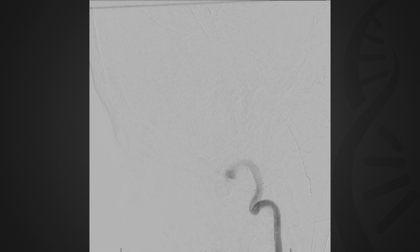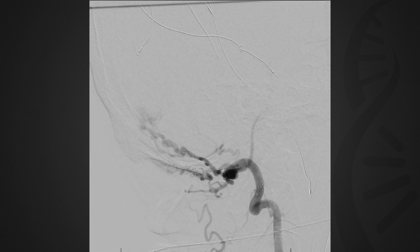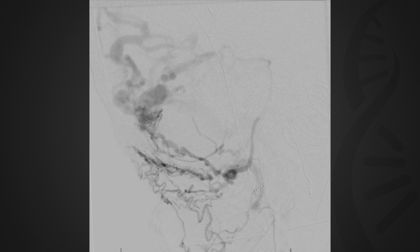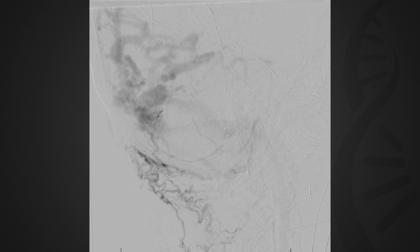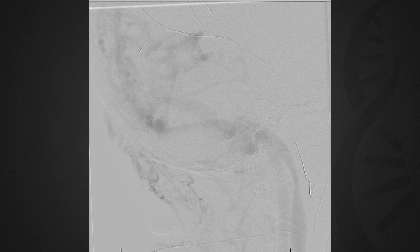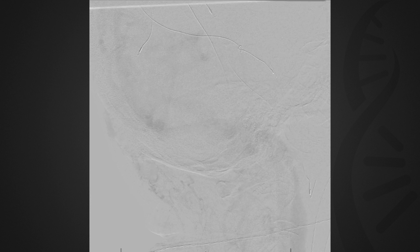Of critical importance, there was evidence of retrograde drainage of the fistula directly into cortical veins with evidence of venous congestion, classifying this as a malignant type 3 fistula with a high rate of neurologic deficit, hemorrhage, and potential for mortality if left alone.